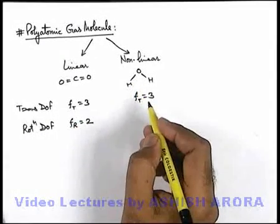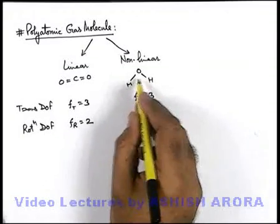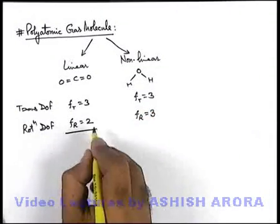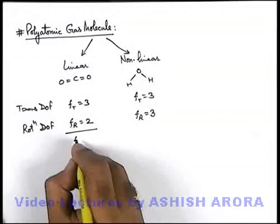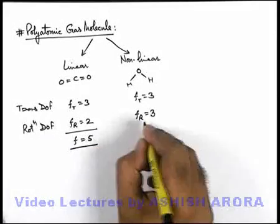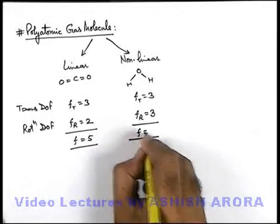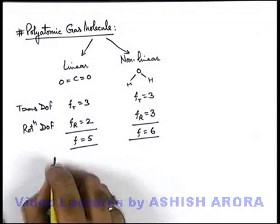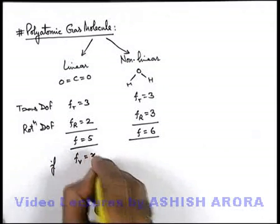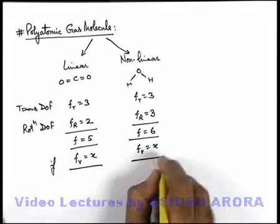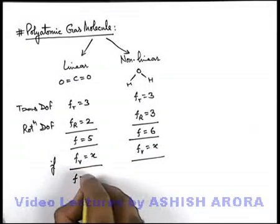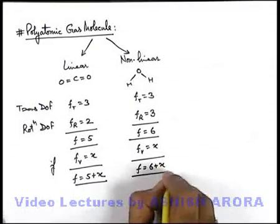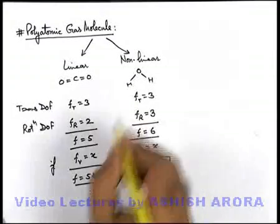For a non-linear molecule, being a two-dimensional or three-dimensional structure, rotational motion about any axis cannot be ignored, so rotational degrees of freedom are three. In total, degrees of freedom for a linear polyatomic gas molecule are five, and for a non-linear polyatomic gas molecule are six. If some vibrational degrees of freedom x also exist, the total becomes five plus x for linear polyatomic molecules and six plus x for non-linear polyatomic molecules.